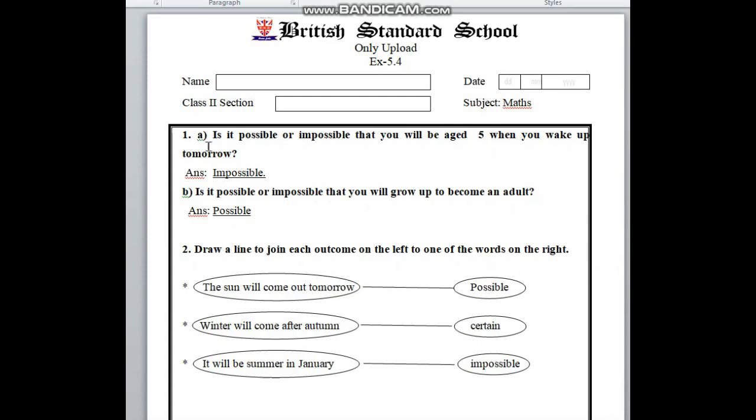Now look at your number 1, it is possible or impossible that you will be aged 5 when you wake up tomorrow. So, it is possible or impossible, just think about it. You aged 5 when you wake up tomorrow, here is 0% chance, so it will be impossible.